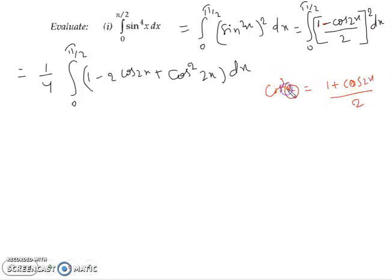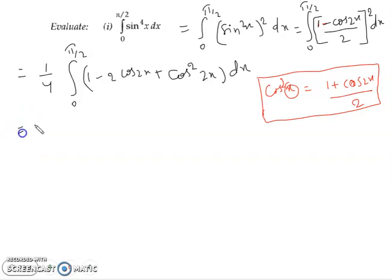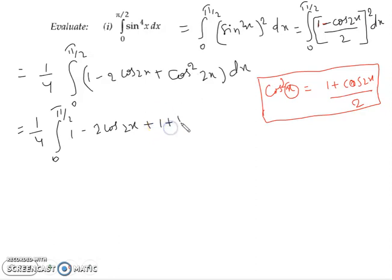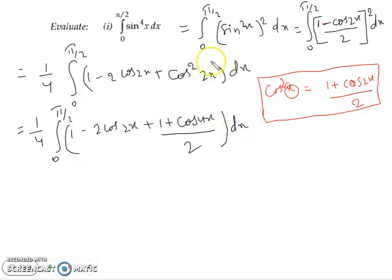Since in our expression theta equals 2x, we can write cos²2x = (1 + cos4x)/2. Now I am going to apply this formula and integrate. So the integrand becomes 1 - 2cos2x + (1 + cos4x)/2, from 0 to π/2.